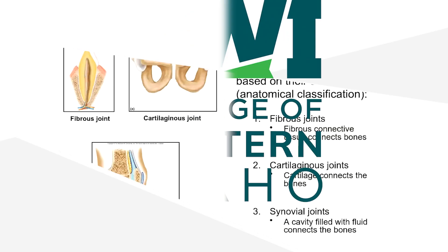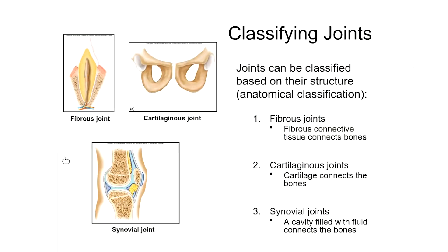This is our last lecture in unit one before our first exam. In this last folder, we're going to look at joints, also known as articulations. These are areas in the body where two bones are articulating or coming together. We'll talk about how joints are classified, and then look at examples of joints in the body to learn more about their structure.